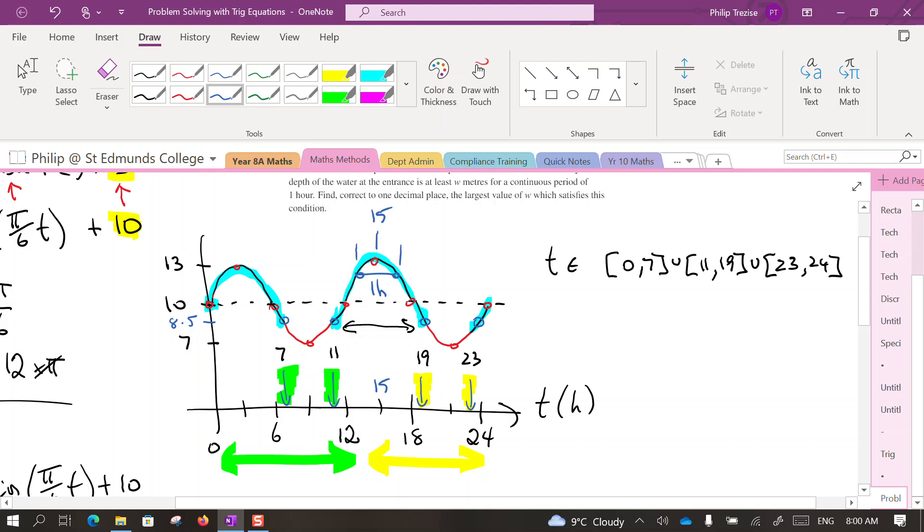Now if it's a one-hour interval, it must start at 14 and a half and finish at 15 and a half at the same depth. In order to find the depth of the water W, we can substitute the time 14 and a half or 15 and a half into our original equation.